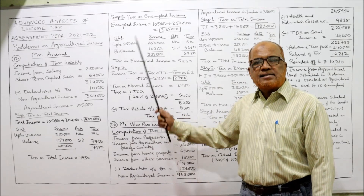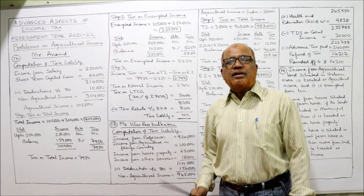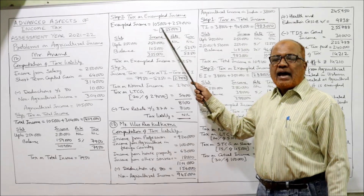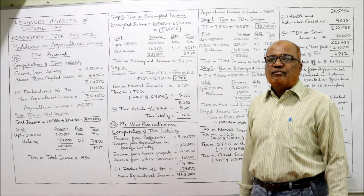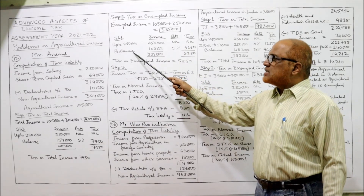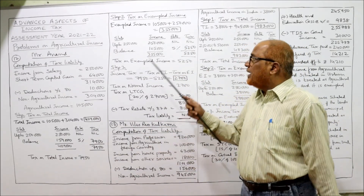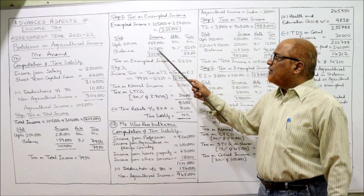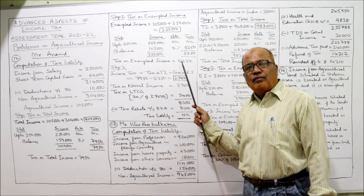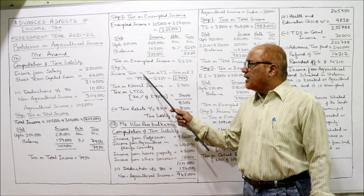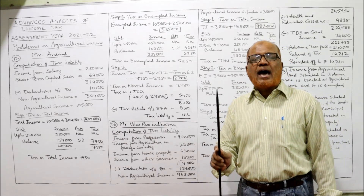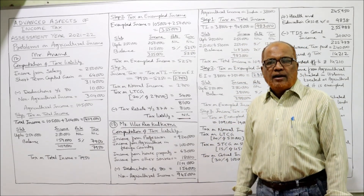Step 2: Tax on exempted income. Exempted income equals agricultural income plus basic exemption limit of 2,50,000. So 1,05,000 plus 2,50,000 equals 3,55,000. Tax on 3,55,000: up to 2,50,000 — nil. Second slab: 3,55,000 minus 2,50,000 equals 1,05,000 at 5% equals 5,250. Step 3: Income tax equals tax on total income minus tax on exempted income: 7,950 minus 5,250 equals 2,700. That is the tax on normal income.